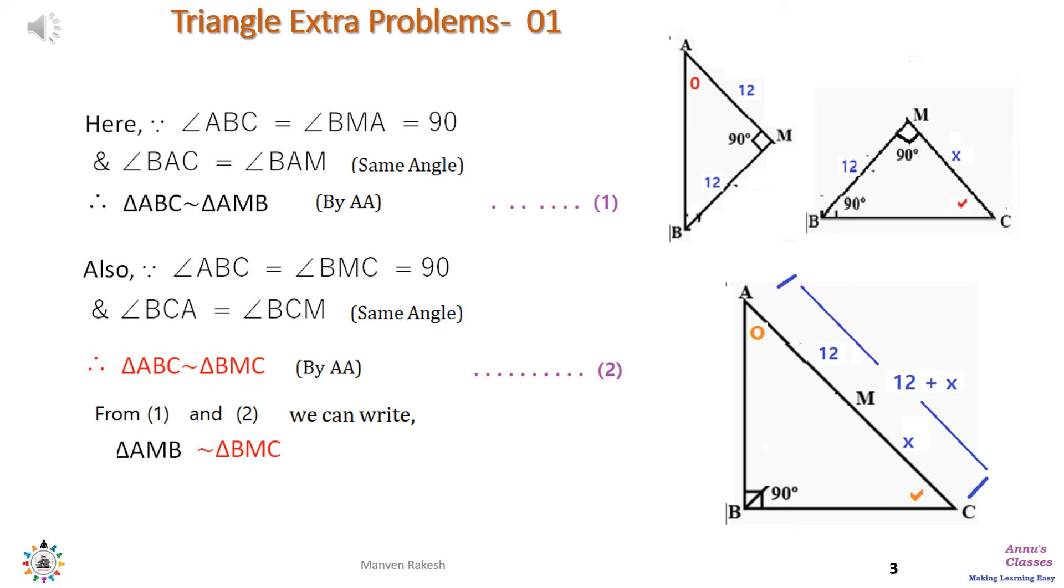Now triangle ABC is similar to BMC, and triangle ABC is also similar to triangle AMB. Therefore both the triangles shown on the upper side, that is triangle AMB, is similar to triangle BMC.